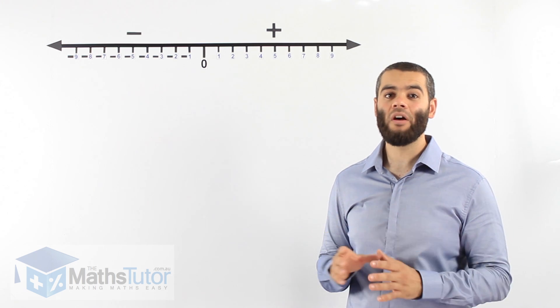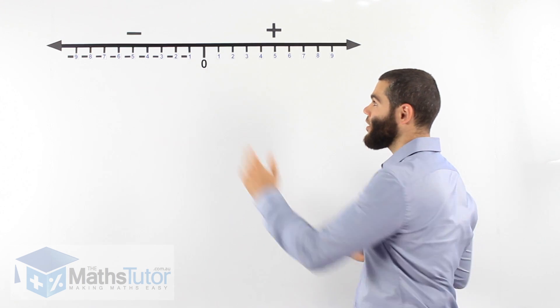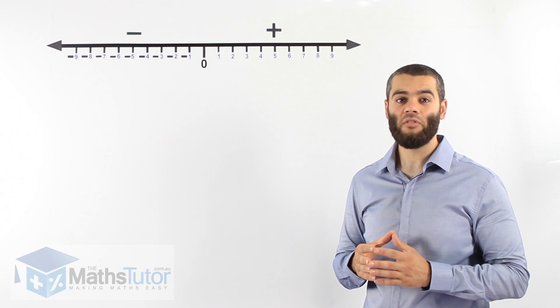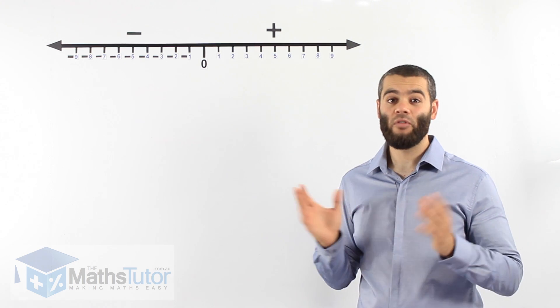So the zero divides the number line into what we have on the left and what we have on the right. On the right we have the positives and on the left we have the negatives.